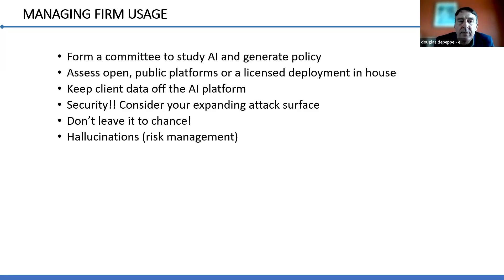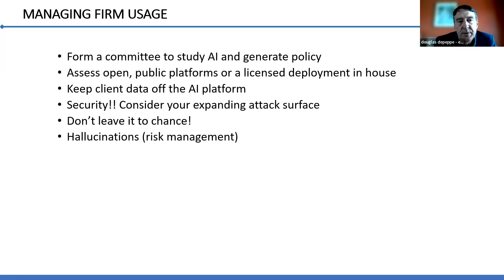Being a cybersecurity attorney, the attack surface — meaning all the ways someone can get in — is important. If you're integrating with AI systems, that's a new integration and new risk, so assess that. A committee approach is important, and you need an interdisciplinary team — not just your privacy attorney or compliance expert, but technology and security professionals as well. You just don't want to leave it to chance because of the known problem of hallucinations — AI will make things up, especially at more advanced stages. That's why you need human oversight.